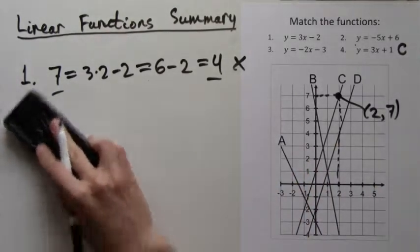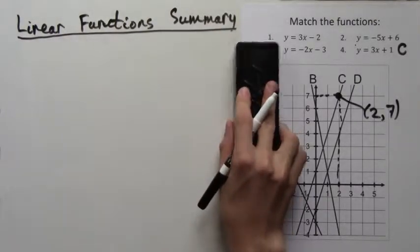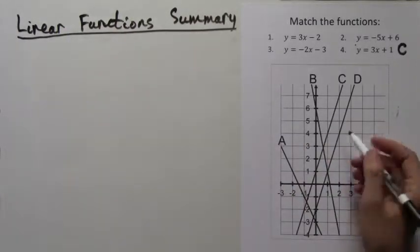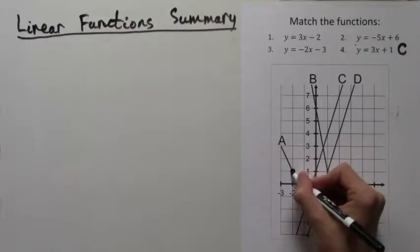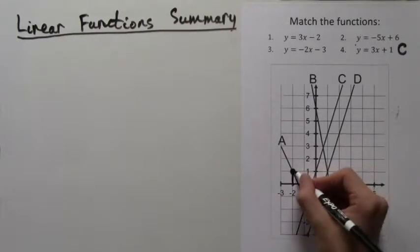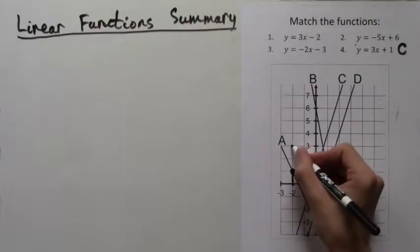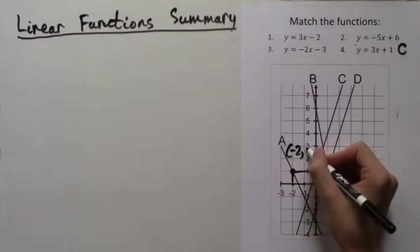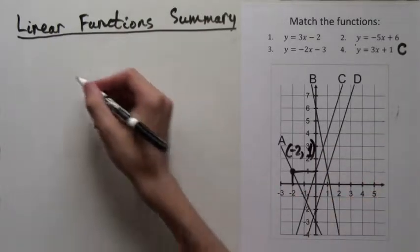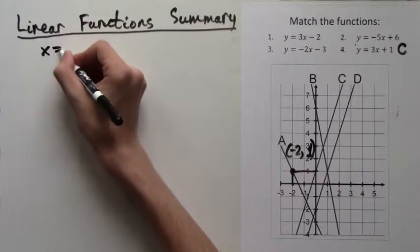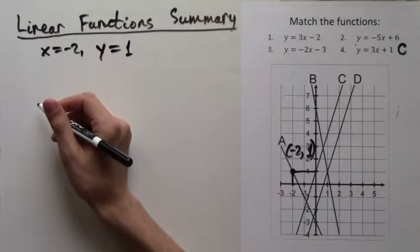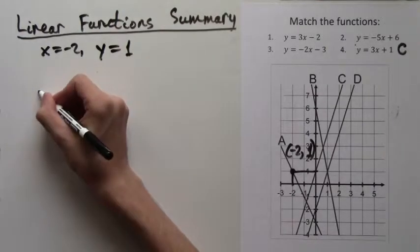So now that we don't have to worry about line C, we will take a point that is on a different line. For example, line A. Let's just take the point (-2, 1). It has x equals negative 2 and y equals 1. So we will plug in x equals negative 2 and y equals 1 into all the formulas except for number 4 until we find the right one.